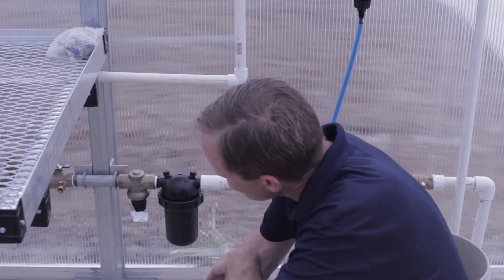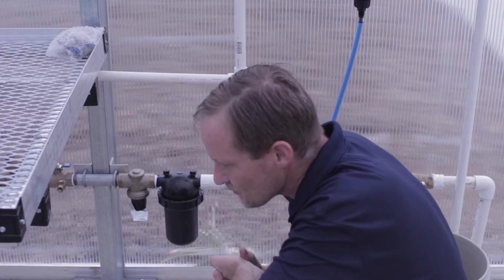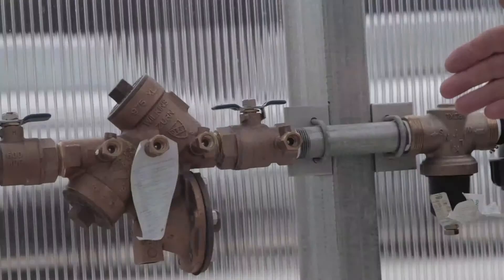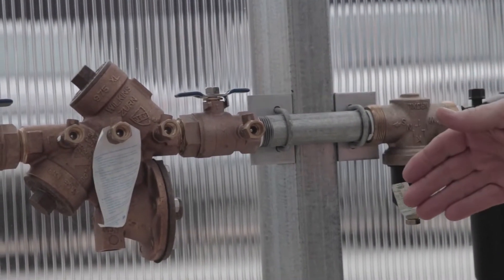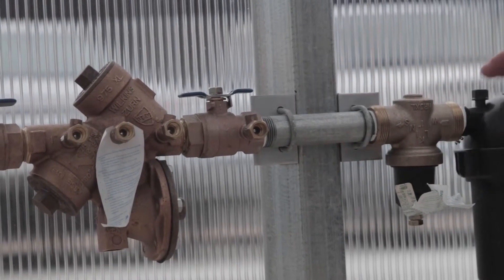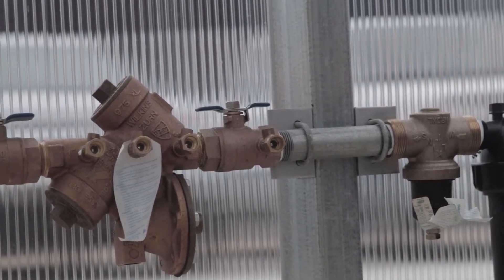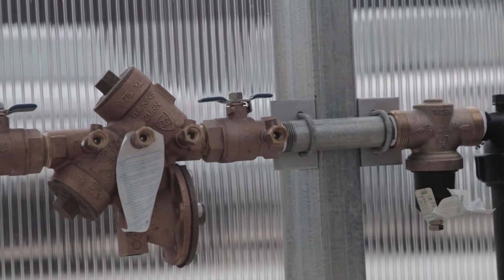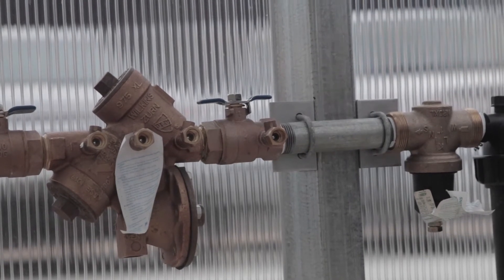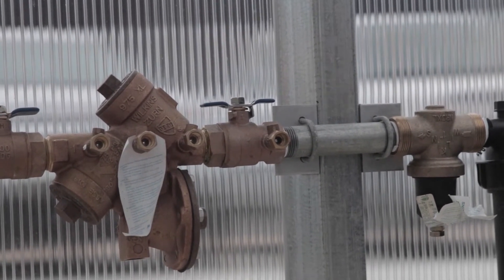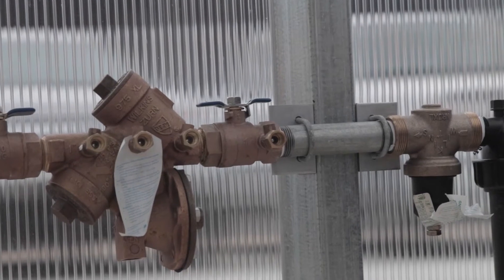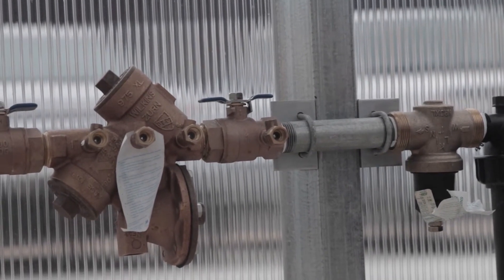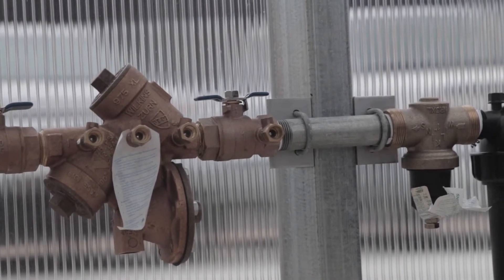Your backflow preventer, a common issue we get is calls saying my backflow preventer is leaking. This is normal. It's because of pressure changes on the input side and the output side. What the backflow preventer does is it prevents any chemicals that may be in your system from making it back into the main water supply.